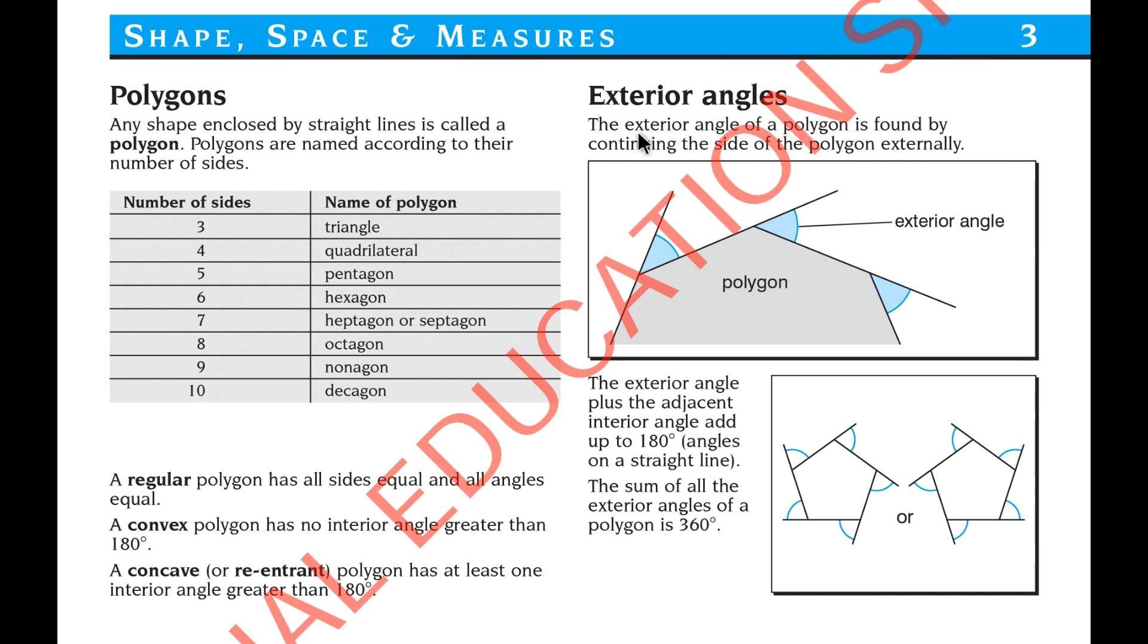Exterior angles. The exterior angle of a polygon is found by continuing the side of the polygon externally. This is an exterior angle, this is an exterior angle, this is an exterior angle. And this is an interior angle, this is an interior angle, this is an interior angle.